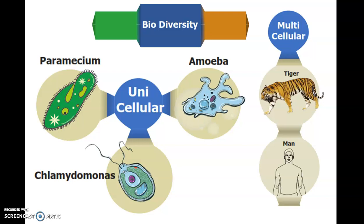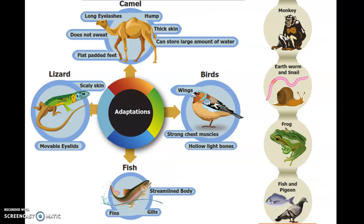Multicellular examples include tiger, man, monkey, earthworm, frog, and fish. These are called multicellular organisms. They show adaptation — for example, a camel is adapted to the desert environment.